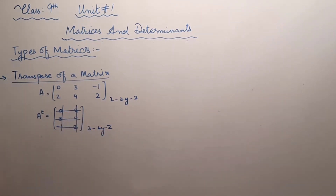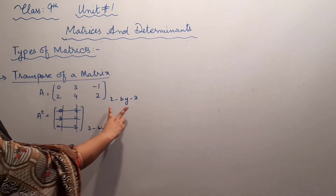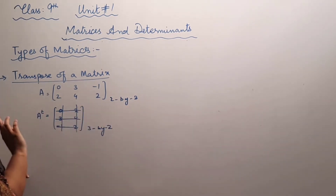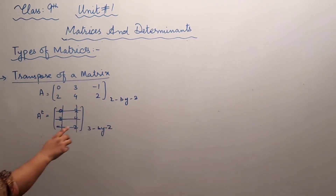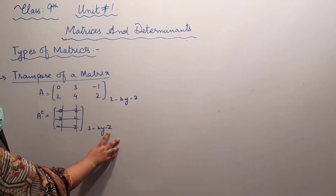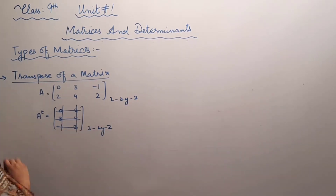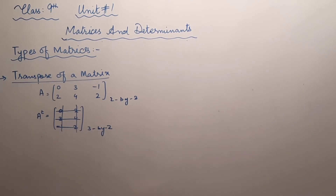And its columns are 2. When we take the transpose of a matrix, its order gets reversed — the rows become columns and the columns become rows. So students, this is known as the transpose of the matrix.